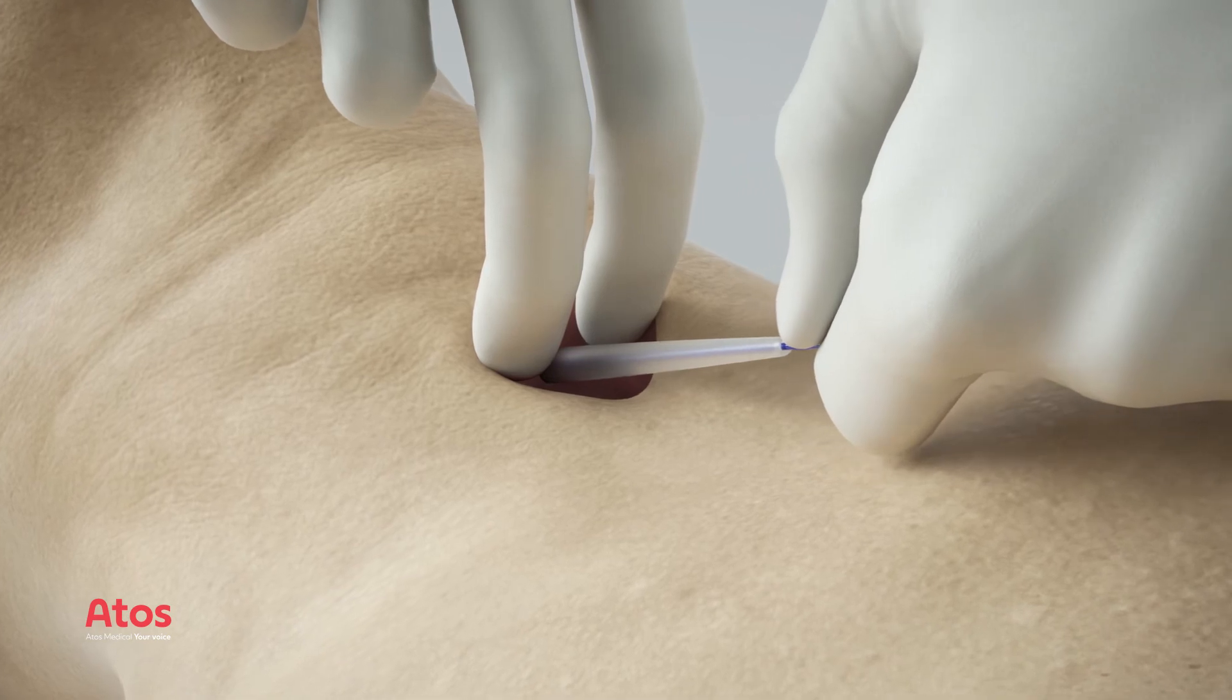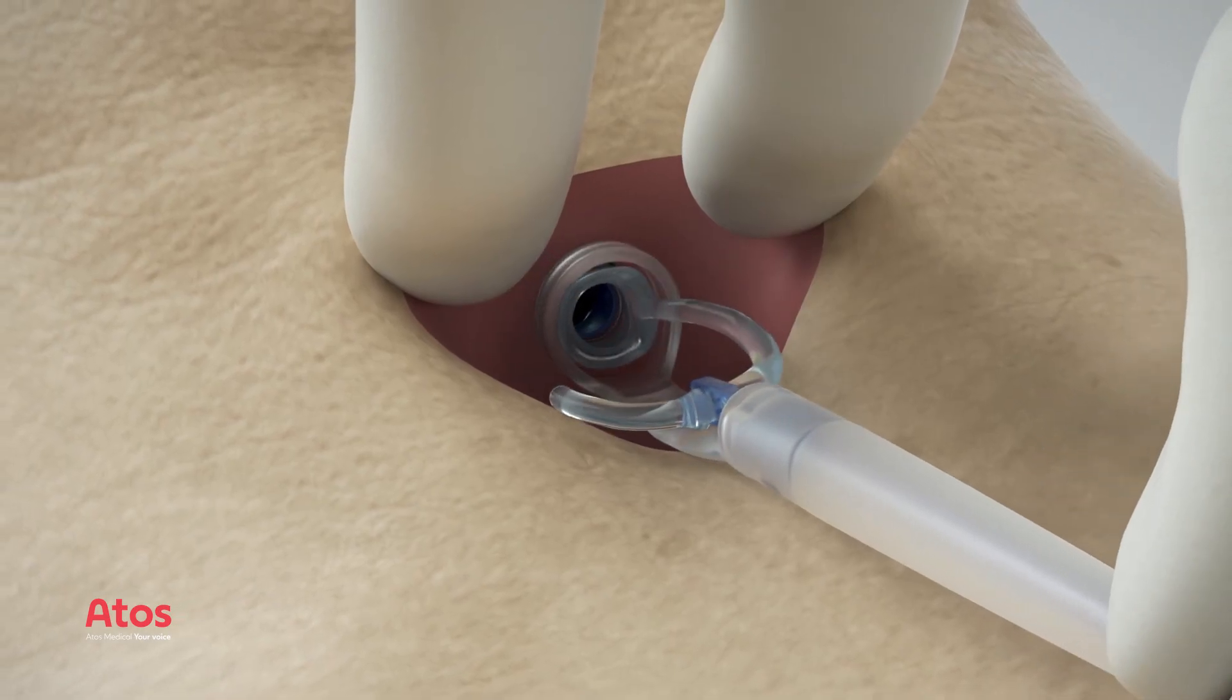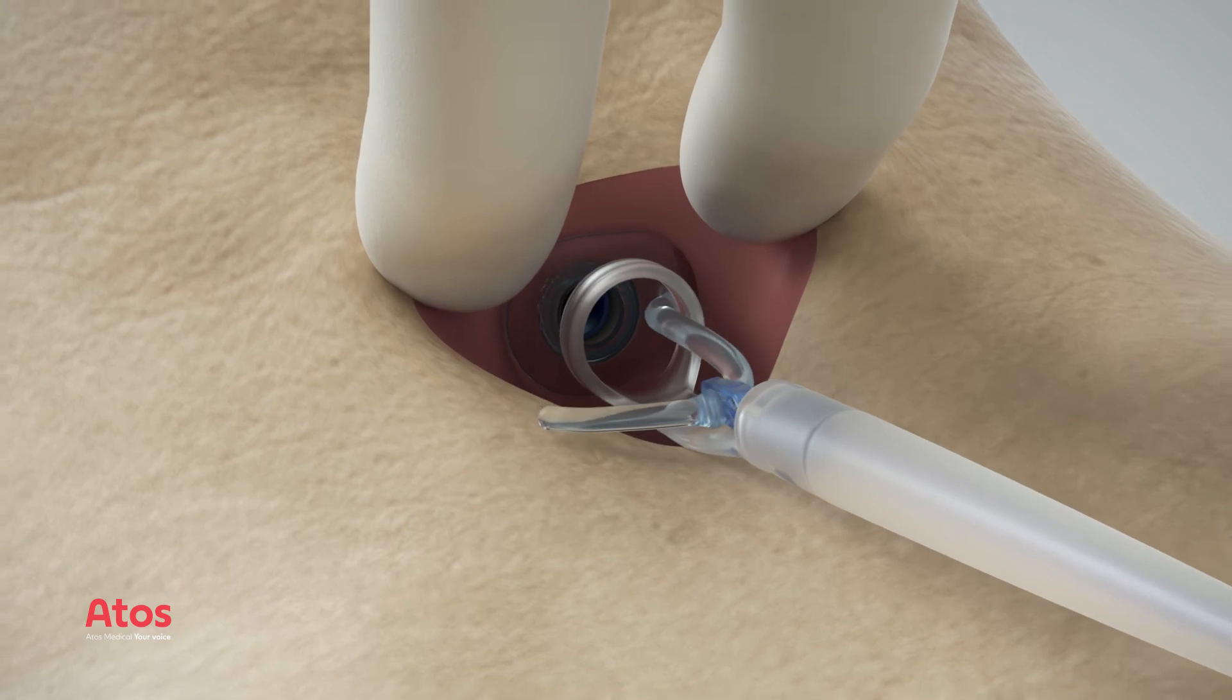Carefully pull the guide wire until the tracheal flange of the voice prosthesis is unfolded in the trachea by the dilator tube.